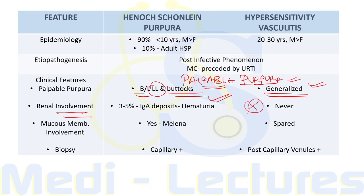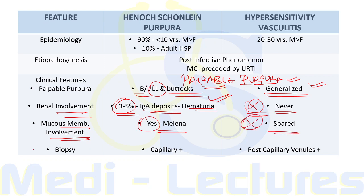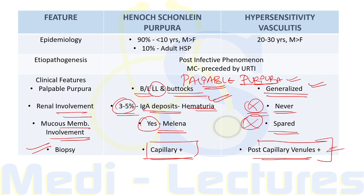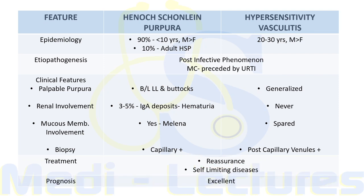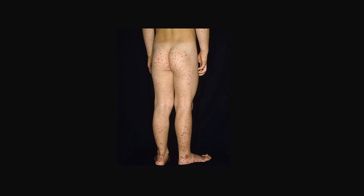Mucous membrane involvement of the GIT is seen with HSP causing melena, but not in hypersensitivity vasculitis. On biopsy, HSP shows involvement of capillaries, while hypersensitivity vasculitis shows involvement of post-capillary venules. Treatment is just reassurance as both are self-limiting diseases, giving excellent prognosis. The typical image shows purpuric rash of HSP involving the lower limbs and buttock region.